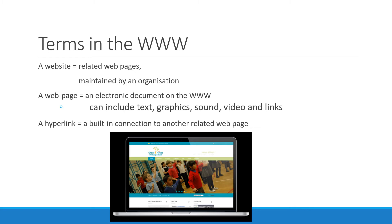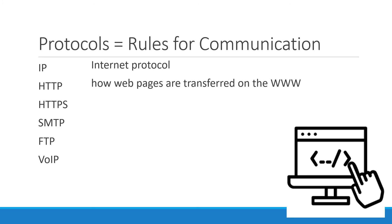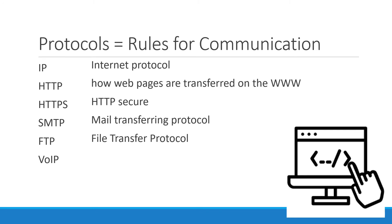A hyperlink is a built-in connection to another related web page. Then we get all sorts of protocols, or rules, used on the internet for computers to communicate with each other. You need to know these: IP stands for Internet Protocol. HTTP is the way that web pages are transferred on the World Wide Web. HTTPS is the same as HTTP but it is secure. SMTP is the mail transferring protocol, used to transfer emails. FTP is for transferring files. And VOIP is for transferring voice over the internet — you've probably used something like Zoom or Skype, which uses VOIP to communicate on the internet.